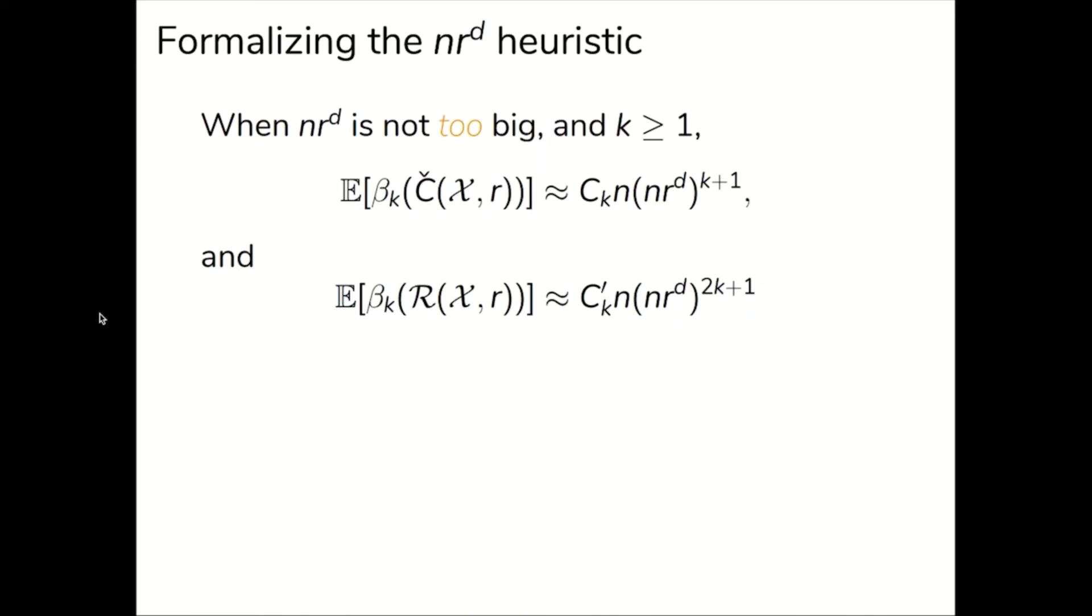Now let's dive into some results. In his 2011 paper, Matt Kahle showed that when k is greater than or equal to 1 and nr to the d is not too big, the average k-th Betti number of the Čech complex is approximately some constant times n times nr to the d to the k plus 1 for large n.